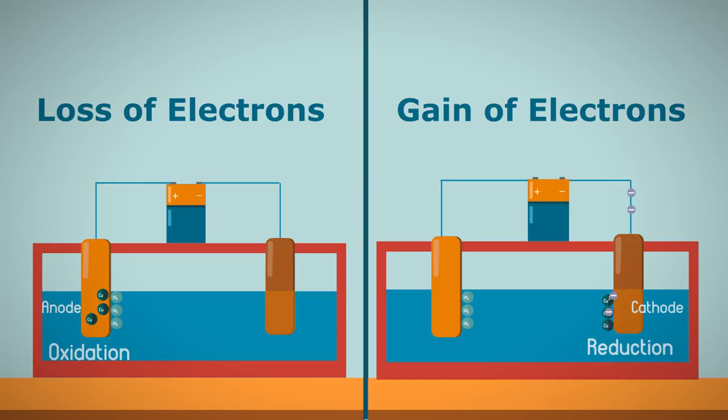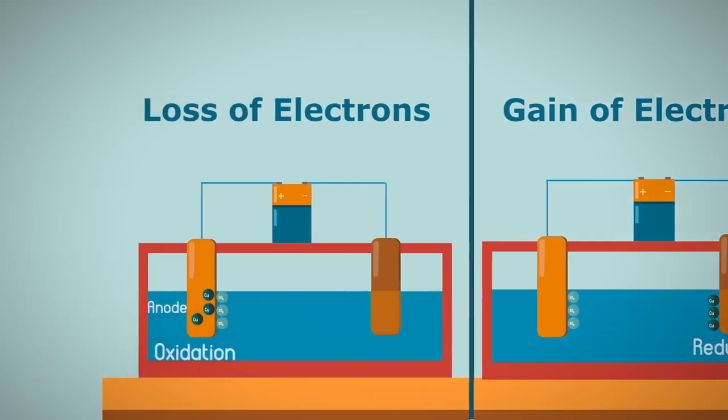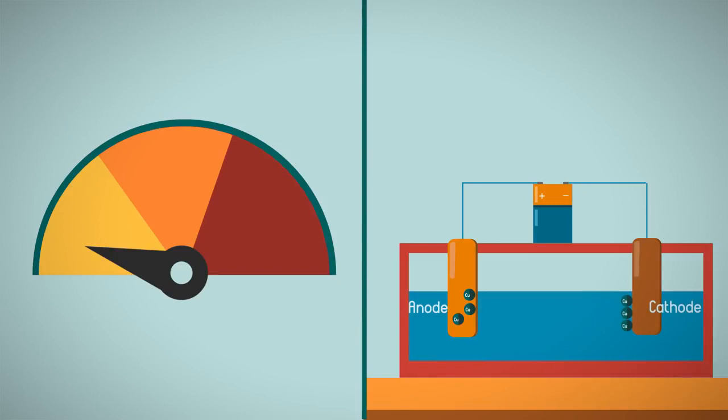So a few other things to consider in electroplating. The speed at which electroplating occurs depends only upon the strength of the electric current. A stronger current increases the speed at which the ions and electrons move through the circuit, speeding up the plating process. One way to increase the current is by increasing the concentration of ions in the solution.